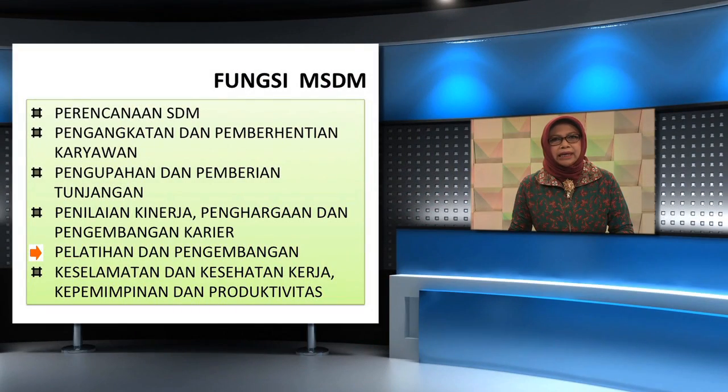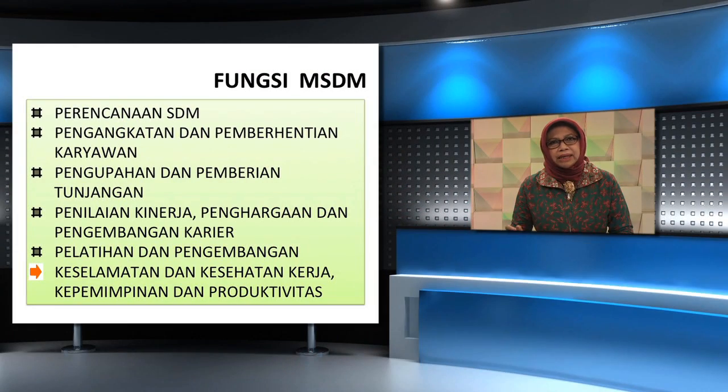Lima, pelatihan dan pengembangan. Aktivitas-aktivitas utamanya seperti pendesainan dan implementasi program-program pelatihan dan pengembangan beserta program evaluasinya. Enam, keselamatan dan kesehatan kerja, kepemimpinan dan produktivitas. Meliputi aktivitas-aktivitas utama seperti: A. Pendesainan dan implementasi manajemen keselamatan dan kesehatan kerja. B. Implementasi program-program motivasi karyawan. C. Penyusunan strategi mengatasi konflik organisasional. D. Penghitungan tingkat produktivitas organisasional.